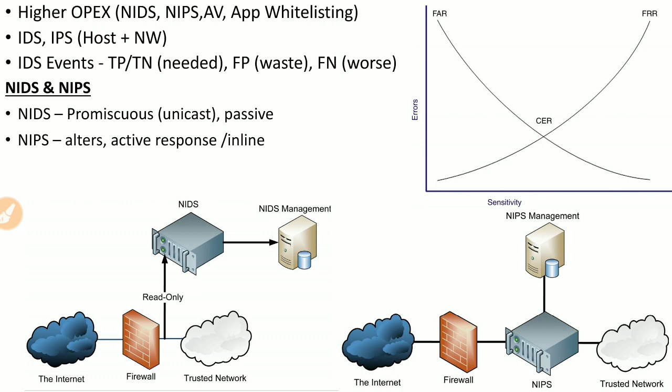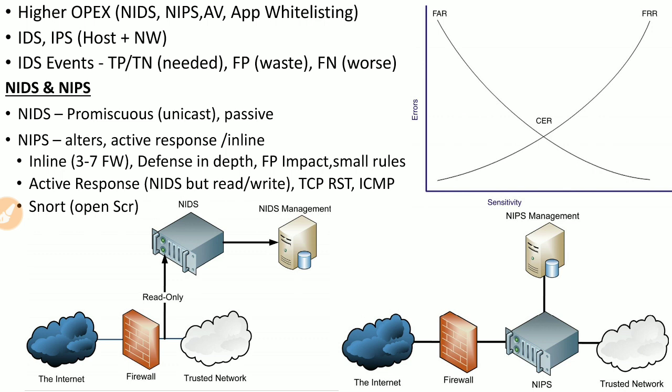The NIPS is deployed in inline mode — directly in line with the firewall — so no traffic can bypass it. It serves as a layer 3 to 7 firewall, monitoring and preventing malicious attacks from the network layer up to the application layer. You do not replace the firewall with NIPS; rather, it provides defense in depth so that sophisticated attacks bypassing the firewall are caught by the NIPS.